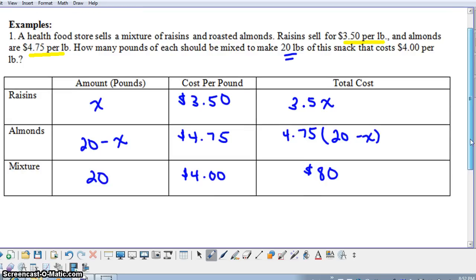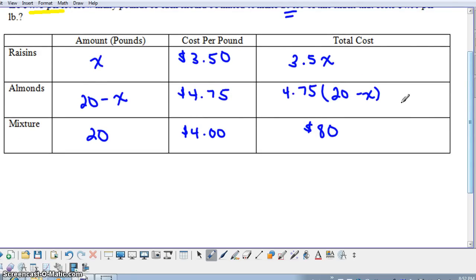Our mixture is based on raisins and almonds, and we have a certain cost for the raisins and a certain cost for the almonds, and together these add to $80. So to get our equation, we're going to add in this last column, we're going to have the cost of the raisins is contributing to the mixture, plus the cost of the almonds is contributing to the cost of the mixture, and the total cost of the mixture is $80.